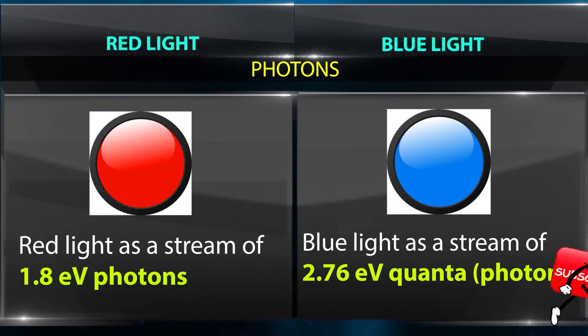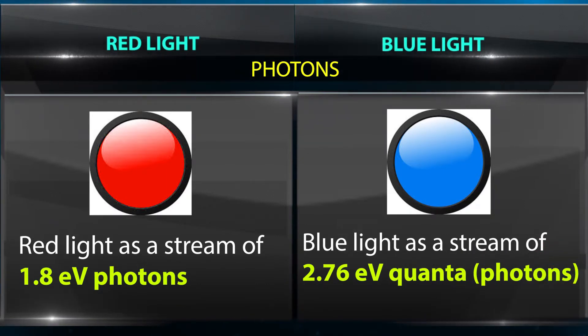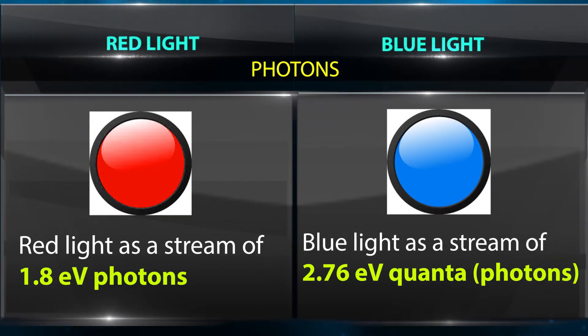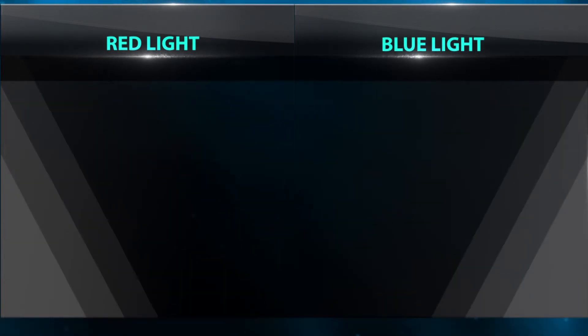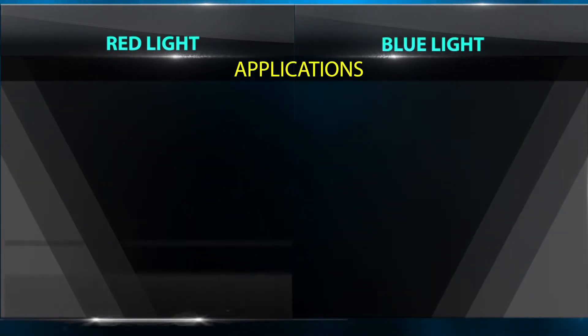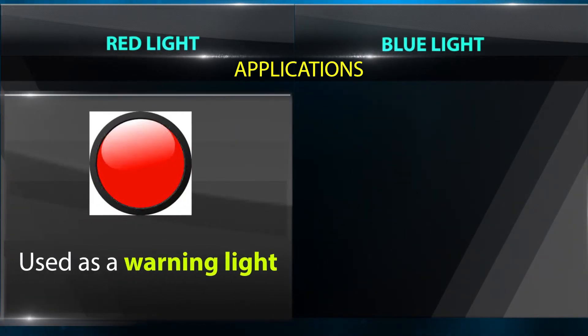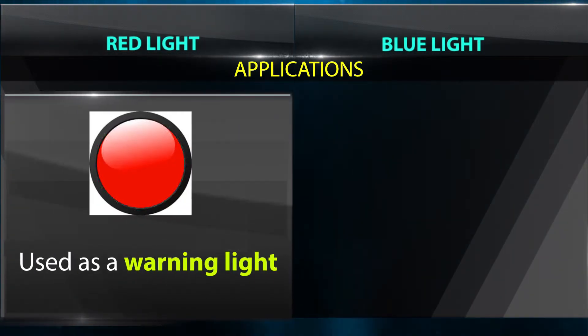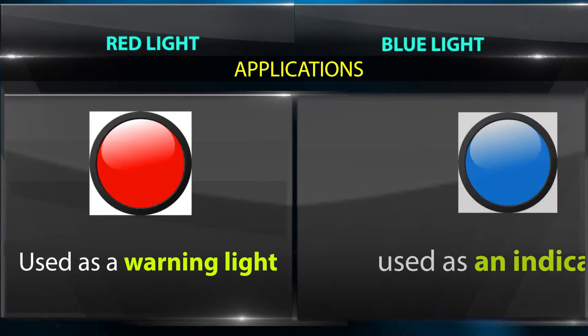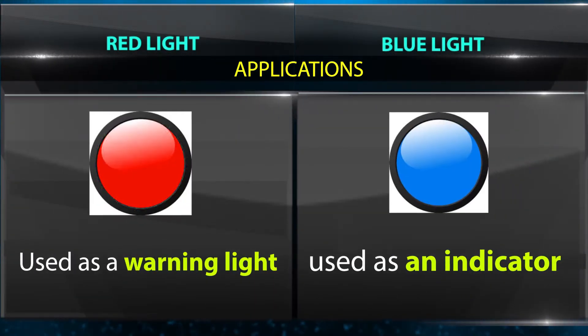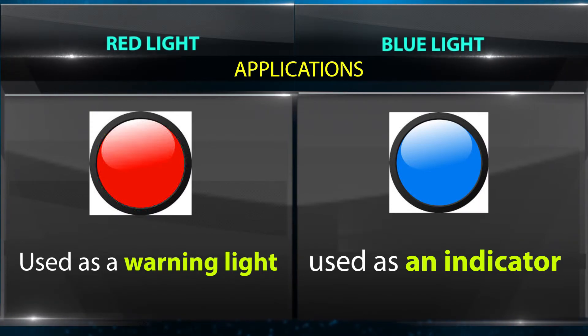Applications — red light is used as a warning light, whereas blue light is hardly used as an indicator.